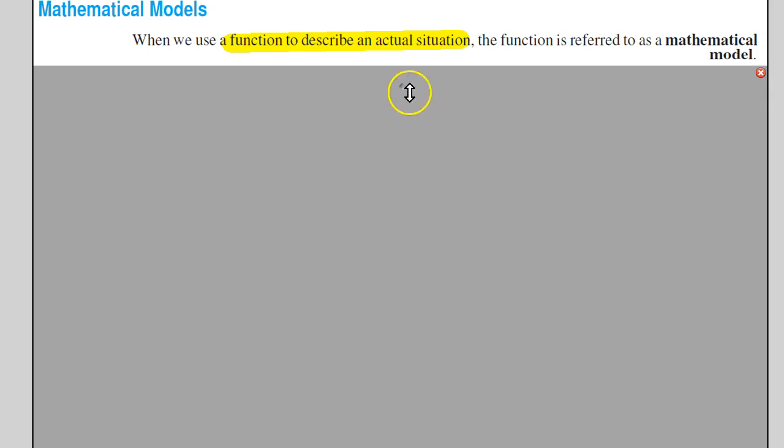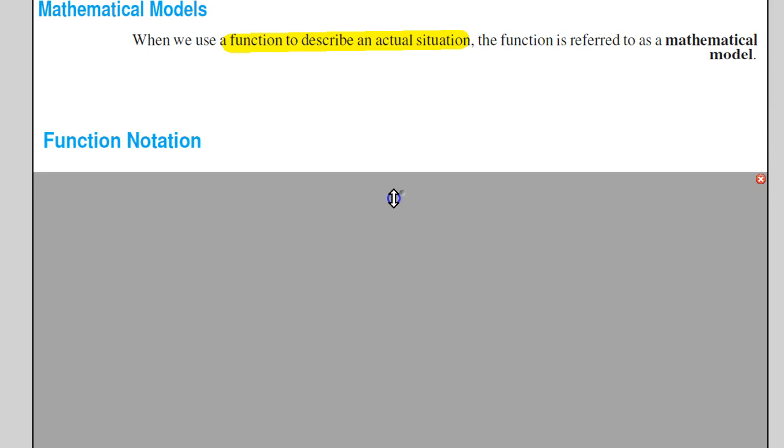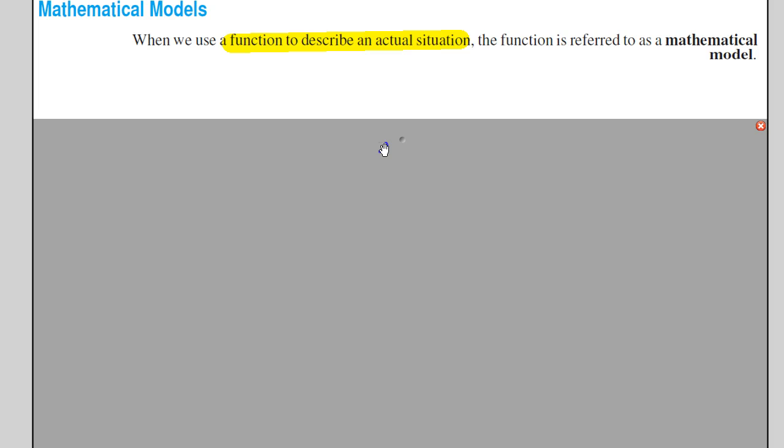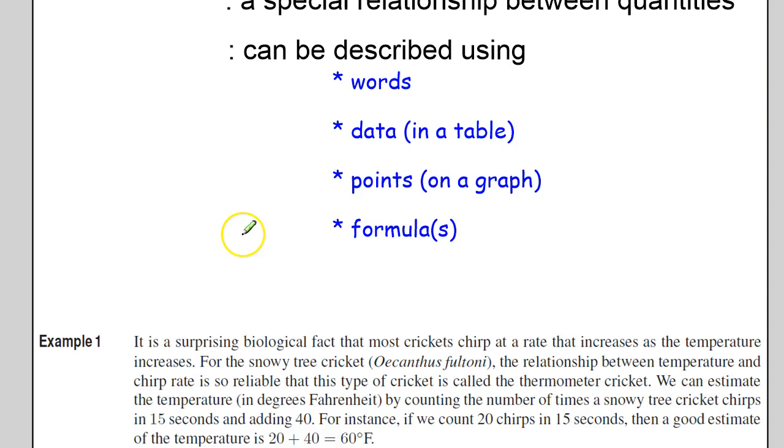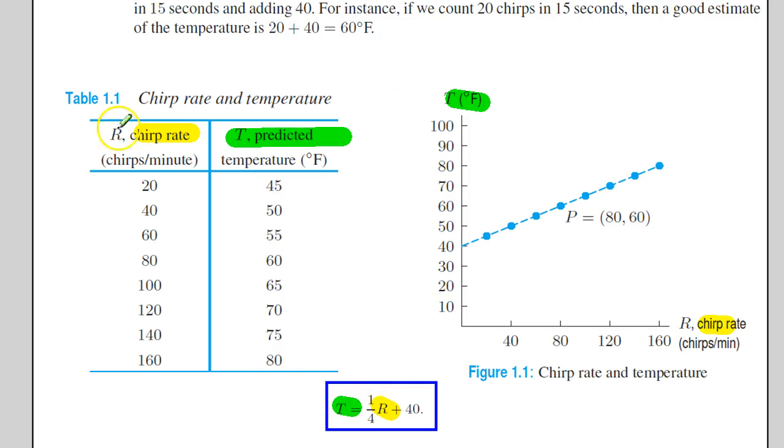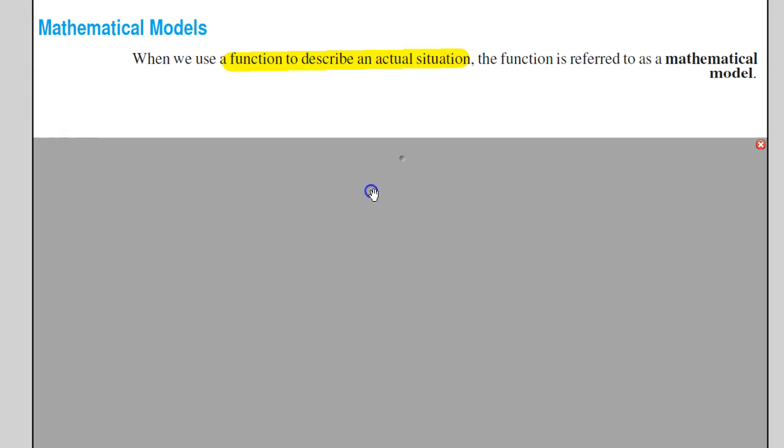We will be showing some examples of that in future sections. Anywhere from business to government to chemistry to biology to physics, all of them use mathematical models. And by definition, those are functions that are used to describe those situations. For example, the chirp rate, this is an example of a mathematical model that describes the situation between chirp rates of crickets and temperatures.